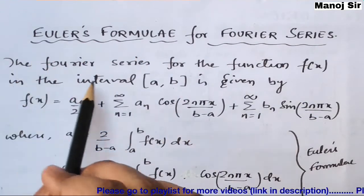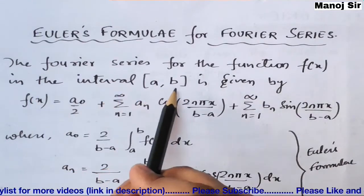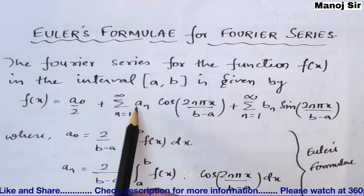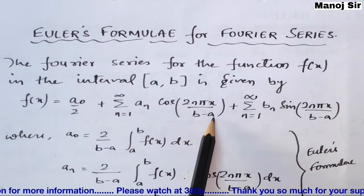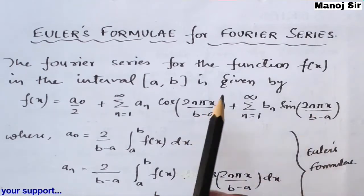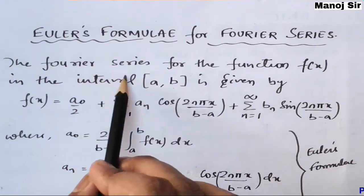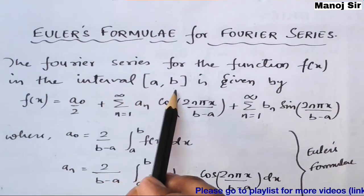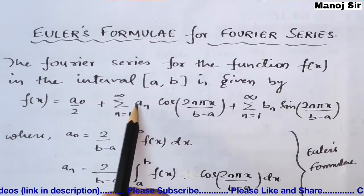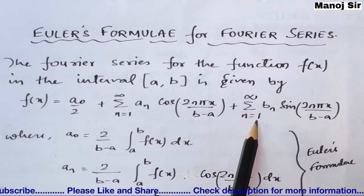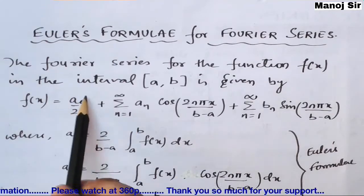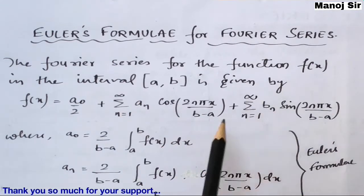The Fourier series for the function f(x) in the interval (a, b) is given by: f(x) = a₀/2 + summation n=1 to infinity of aₙ cos(2nπx / (b-a)) + summation n=1 to infinity of bₙ sin(2nπx / (b-a)). Here a₀, aₙ, and bₙ are constants and we need to find their values.